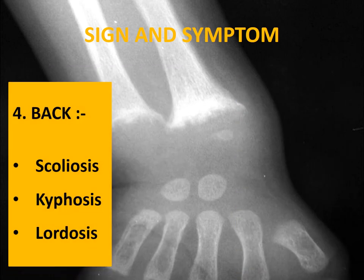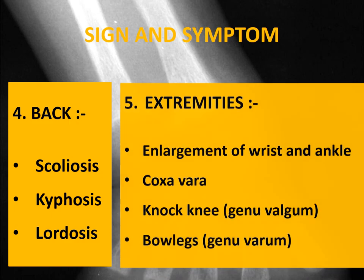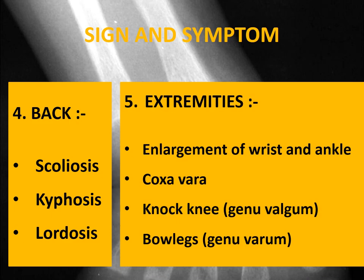In the back, scoliosis, kyphosis, and lordosis can be presentations due to rickets. In the extremities, enlargement of the wrist and ankle is the classical feature of rickets. It is due to the enlargement or widening of the growth plate and widening of the metaphysis.